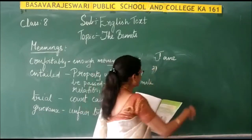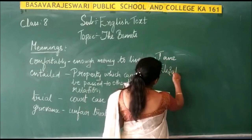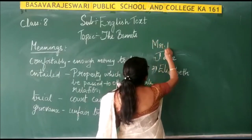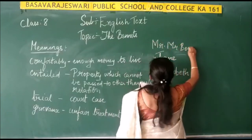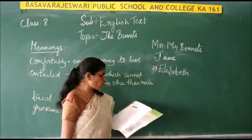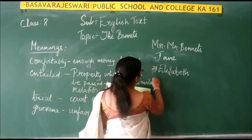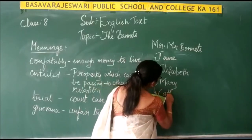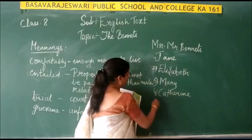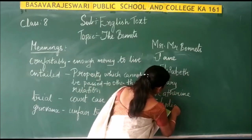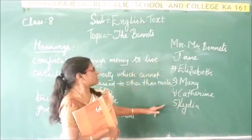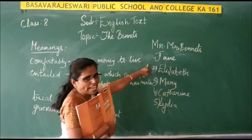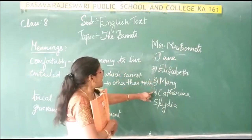the second one was Elizabeth. The third one was Mary, the fourth one was Catherine, and the fifth one was Lydia. So the family consisted of Mr. and Mrs. Bennett and their five daughters: Jane, Elizabeth, Mary, Catherine, and Lydia.